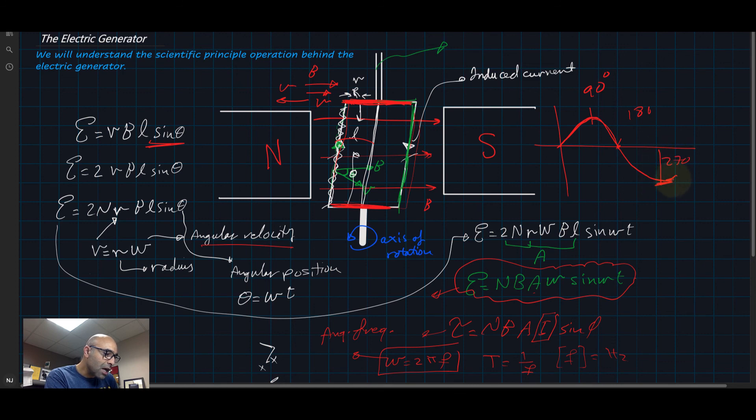And it reverses direction and it gets maximum in the negative direction at 270 degrees and it keeps going up now till it's zero degrees. At zero degrees it becomes zero again and we return to this original position and the cycle starts again. And that's why this is known as an alternating current.